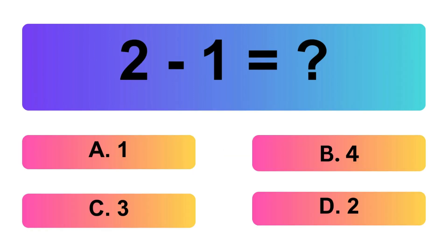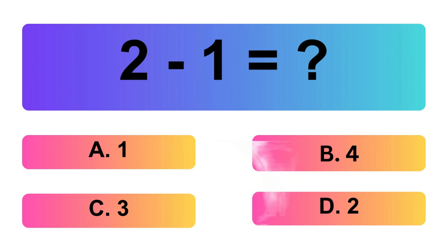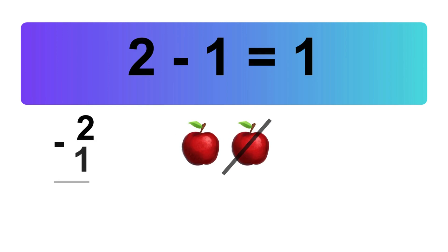2 minus 1 is equal what? Let's count it: 1. So, the answer is 2 minus 1 is 1.